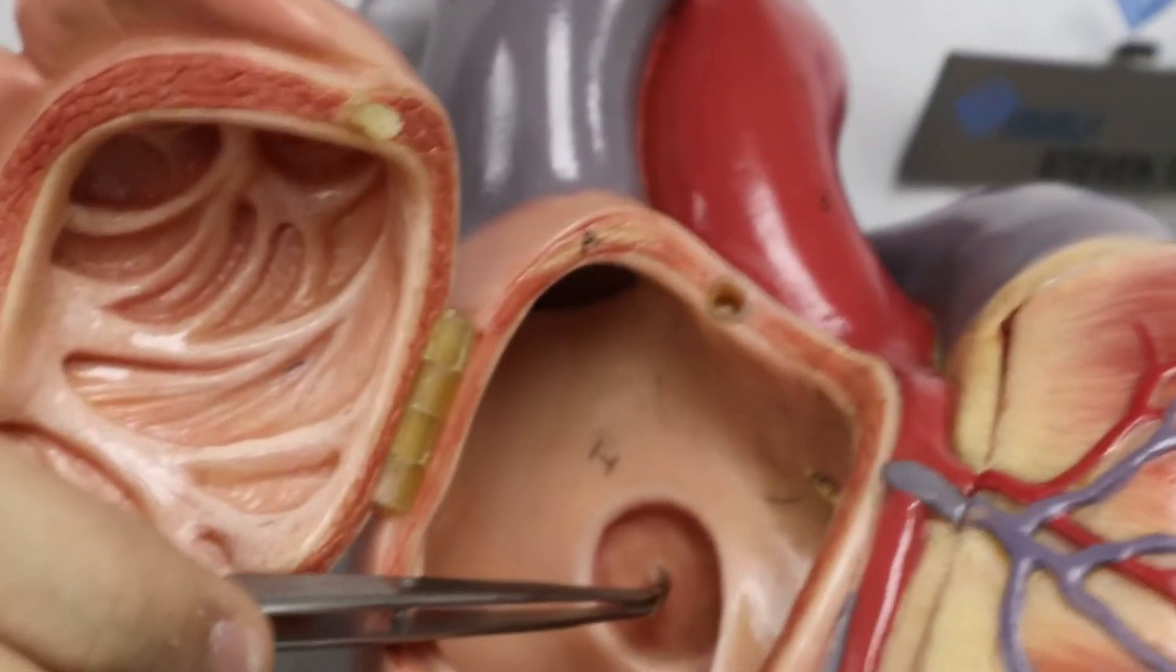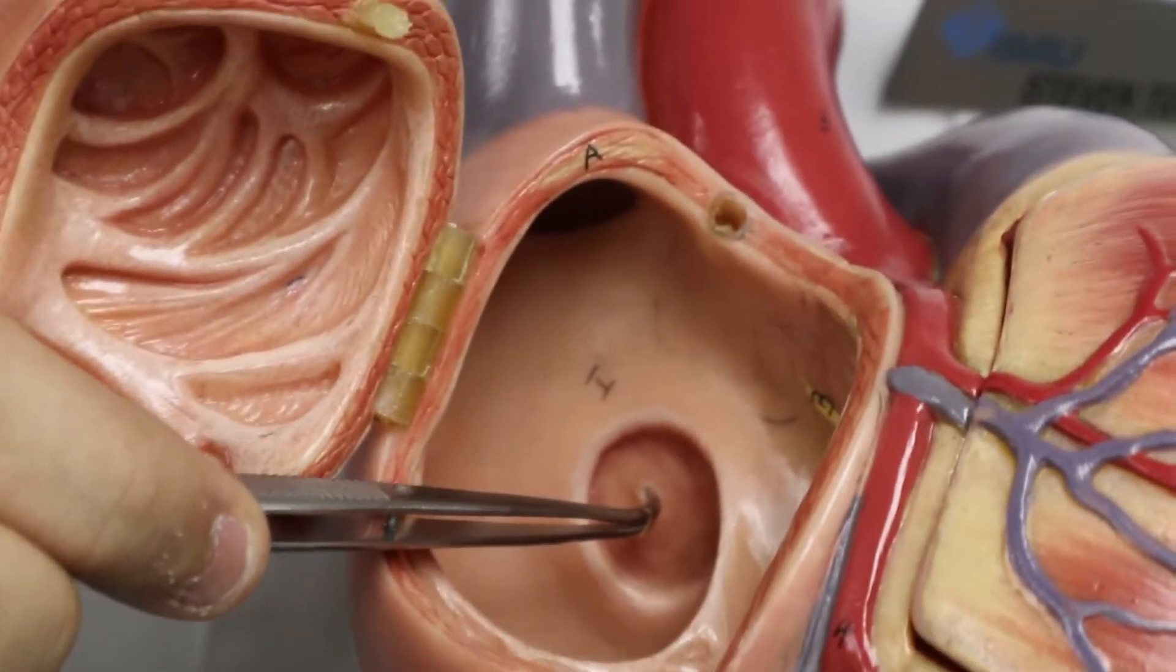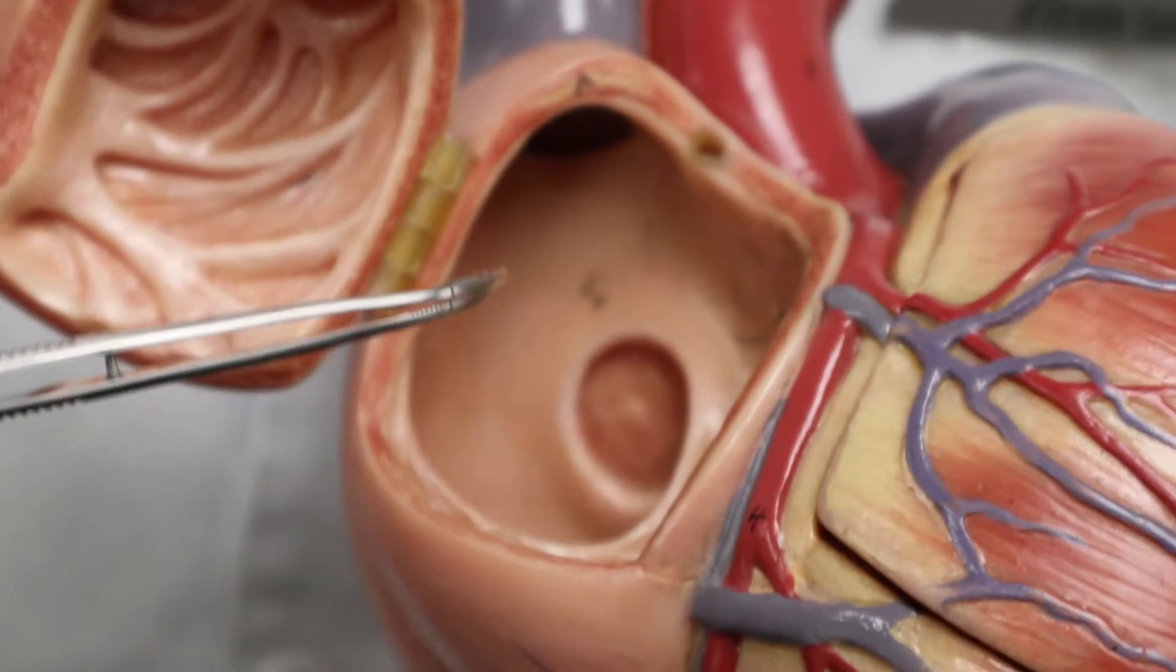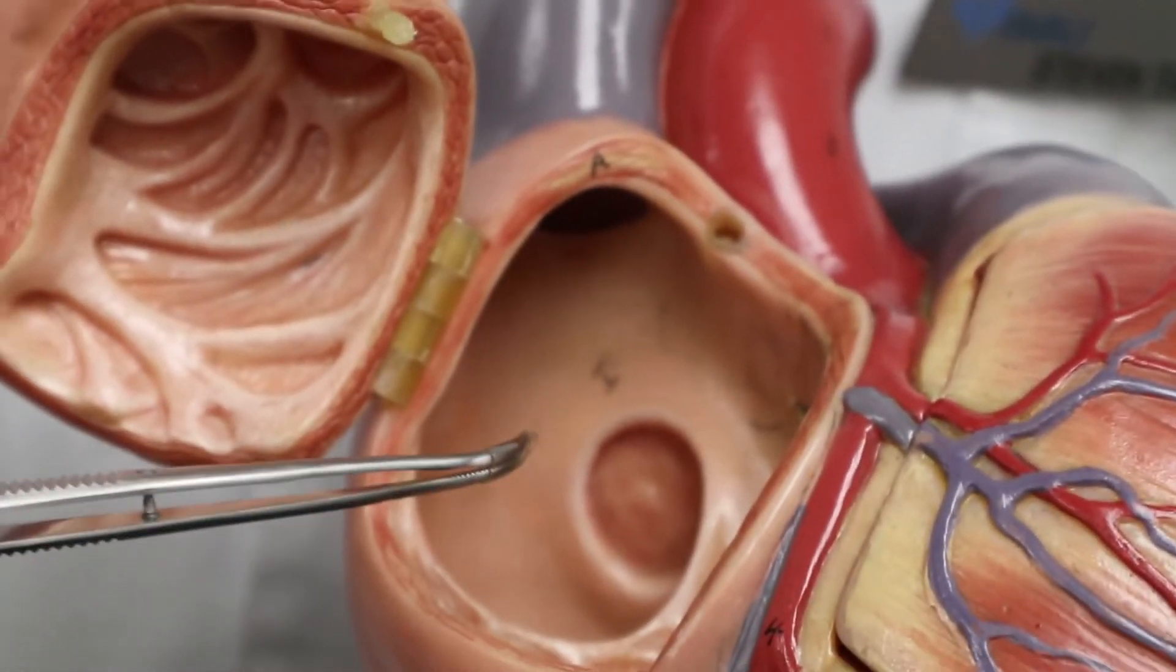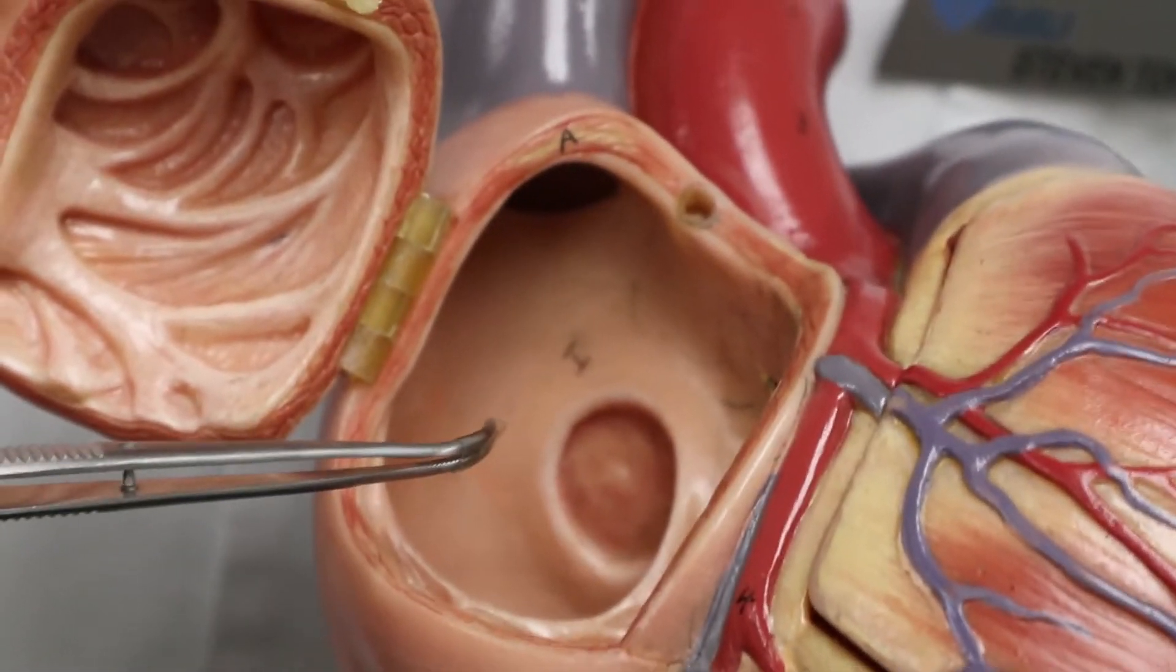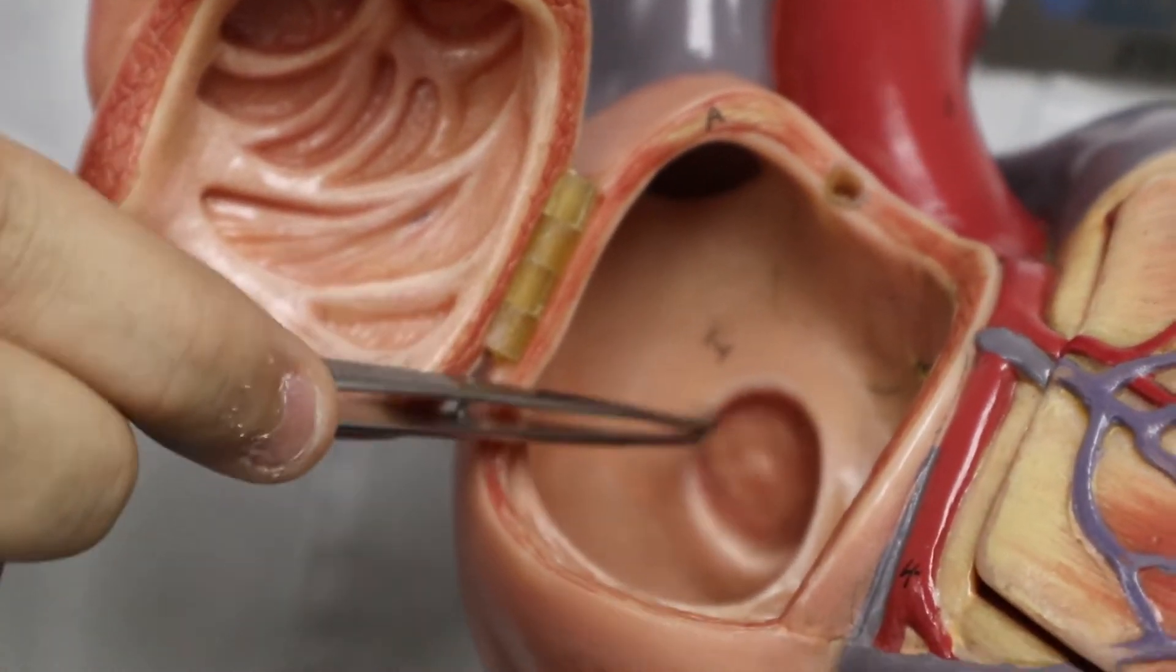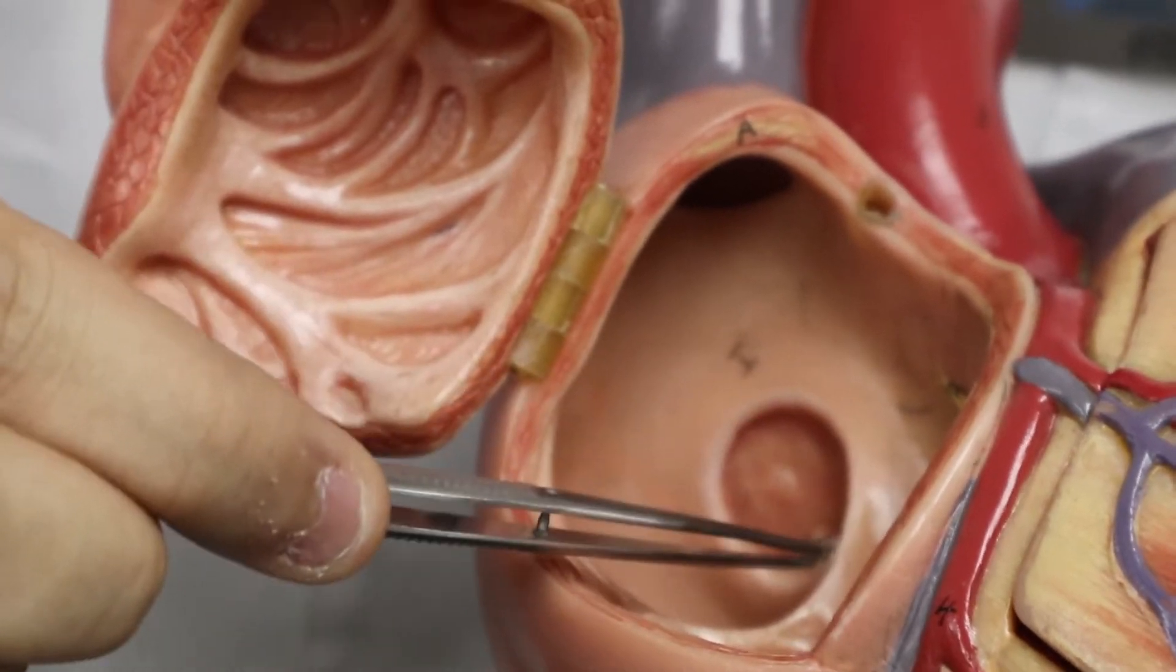There is a shallow depression at the interatrial septum known as the fossa ovalis. There are two developmental origins of the interatrial septum. The septum primum develops into the fossa ovalis. The septum secundum develops into the limbus fossa ovalis.